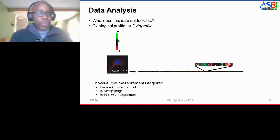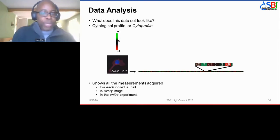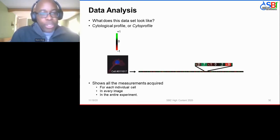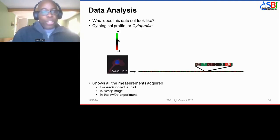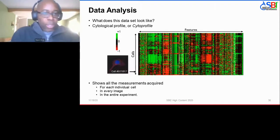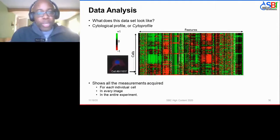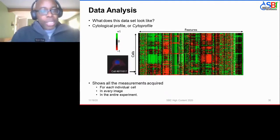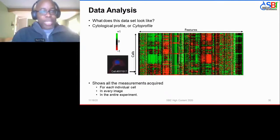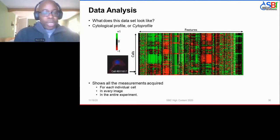Once you've QC'd the image, you can start digging into your data. At the single cell level, each cell has what can be called a cytoprofile — a feature vector in which each measurement you've taken is part of a long barcode or string of numbers. Imagine this for all cells across a well, all wells across your experiment, and all features measured — you can easily capture tens, hundreds, or even thousands of features. The body of data can be quite large: gigabytes or perhaps terabytes, and this is just for a 2D image.